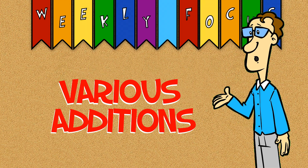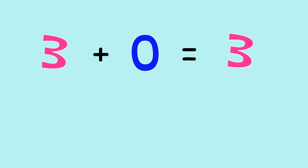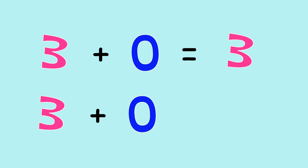Let's do some additions. What does three plus zero equal? That's right, three. Three plus zero equals three.